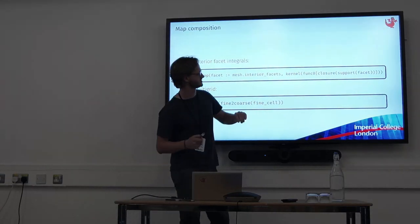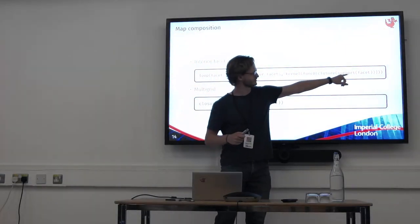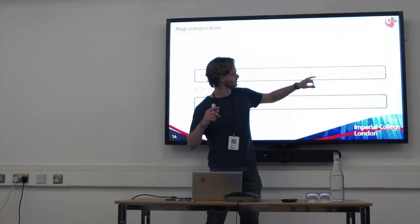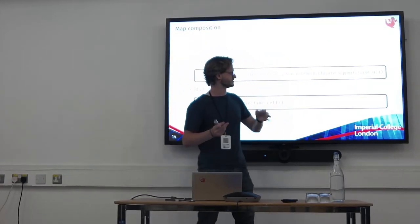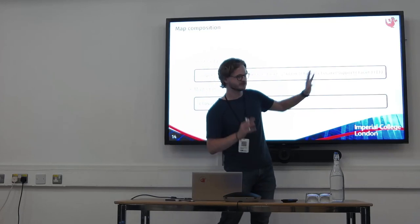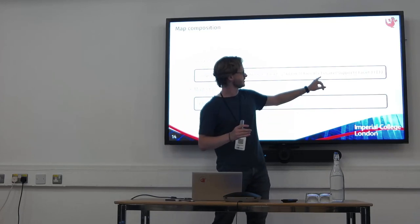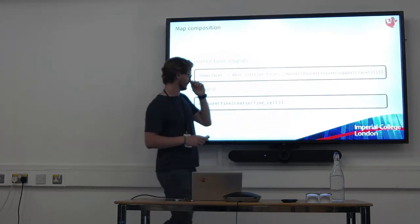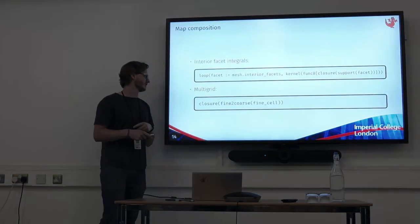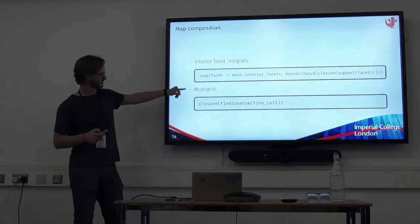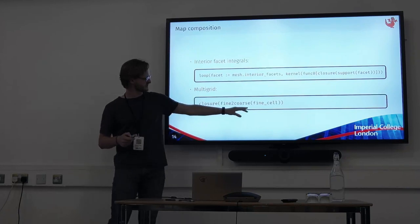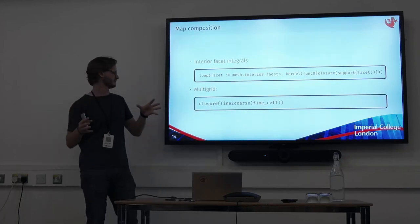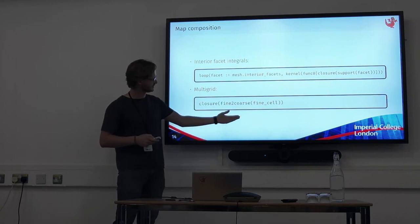We want to have two maps. The support of a facet is the cells that touch the facet, and then we want the closure — all the DOFs that touch those cells. This is something PyOP2 cannot do: we can compose maps to give us the right degrees of freedom we want. Other applications would be things like multigrid, where we might have a fine cell, go to the coarse cell, and get all the degrees of freedom on that.